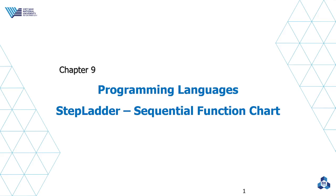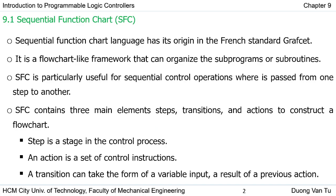Today we talk about Chapter 9: programming language Step Ladder and Sequential Function Chart. In the previous chapter we already studied the Ladder language, and in this chapter we use the Sequential Function Chart. This language has its origin from French standards — the name is GRAFCET — and it looks like a flowchart, using symbols to construct the framework.